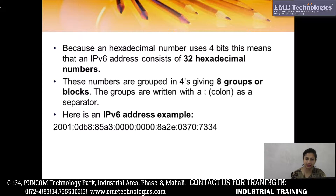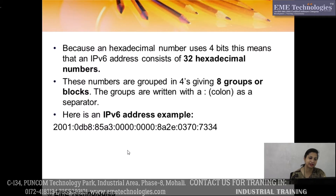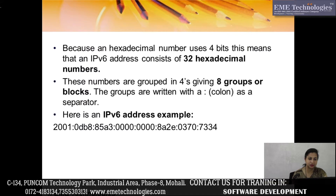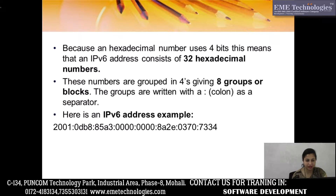If we look at IPv6 in written form, it is made of 4 bits in 8 groups, separated by colons. For example: 2001:0DB8:85A3:0000:0000:882E:0370:7034. In IPv6 we use numbers from 0 to 9 and also alphabets from A to F, which is the hexadecimal system.